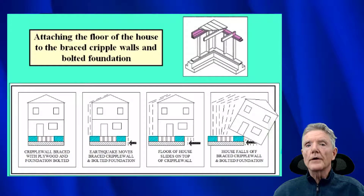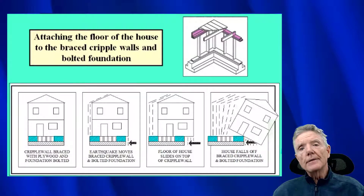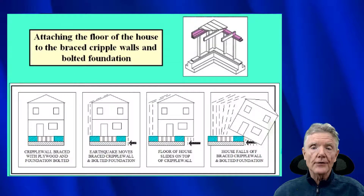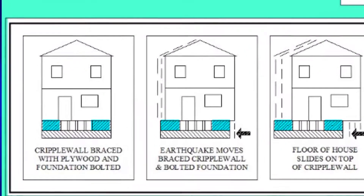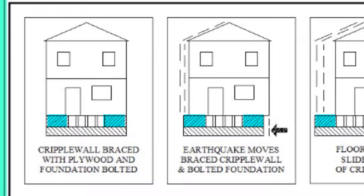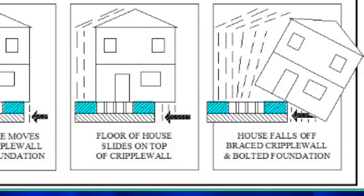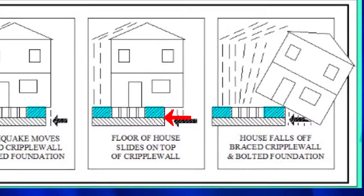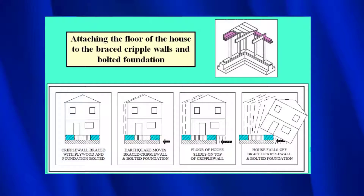Now that we've braced the cripple wall with plywood and bolted it to the foundation, there's one more thing we need to do — we need to make sure that the house stays attached to the top of the cripple wall, otherwise it'll slide off. As the earthquake force comes and pushes underneath the house, the house starts to slide on top of the cripple wall and can fall off completely. What we use are pieces of steel, also called connectors, which you'll see photographs of in a moment.